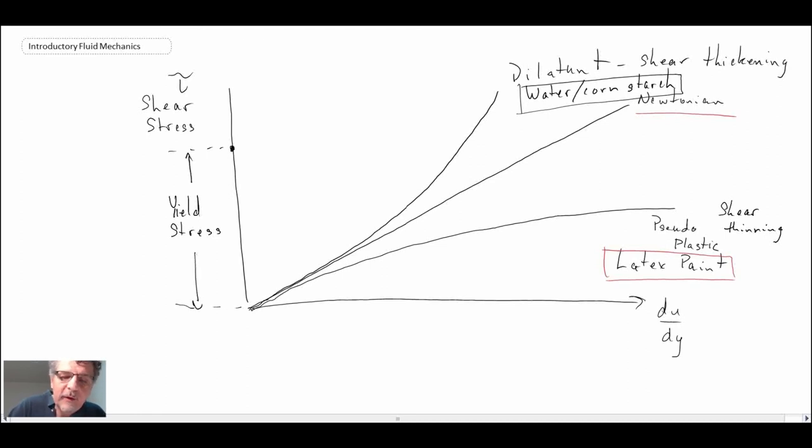And then, once you achieve that, then the fluid starts to flow. So that would be a Bingham plastic. And the most common one is toothpaste. And the attribute is that it requires a certain amount of shear, a yield stress, before it starts to flow.